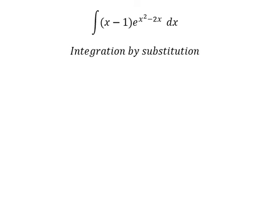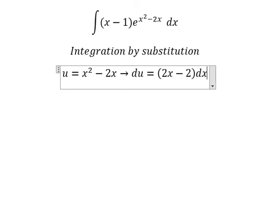So I will put u equal to x squared minus 2x. Later, we do first derivative for both sides. So we have du equal to 2x minus 2 dx.